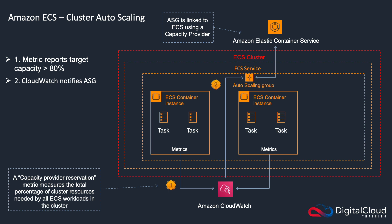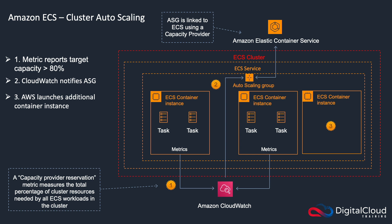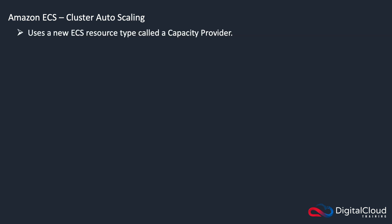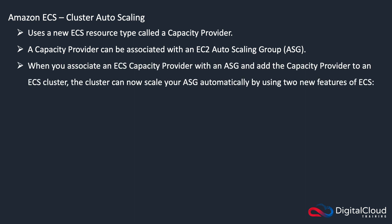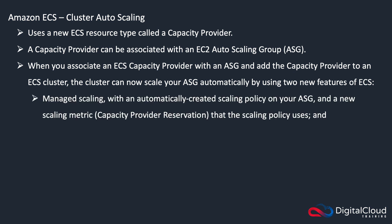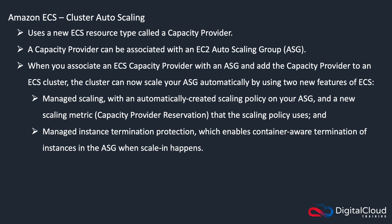When a CloudWatch alarm is triggered, auto scaling gets notified and a new container instance can be launched and registered into the cluster. Cluster auto scaling uses a new ECS resource called a capacity provider, which can be associated with an EC2 auto scaling group. When you associate the ECS capacity provider with the auto scaling group and add it to the ECS cluster, the cluster can scale your ASG automatically using managed scaling — with an automatically created scaling policy on your ASG using the capacity provider reservation metric — and managed instance termination protection, which enables container-aware termination of instances when scaling occurs.